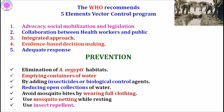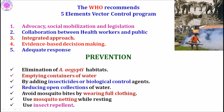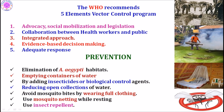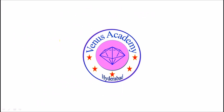Prevention includes eliminating Aedes aegypti habitats by draining standing water, adding insecticides, using biological control agents, and reducing open water collections. Avoid mosquito bites by wearing full clothing and using mosquito netting. Insect repellents should also be used to avoid mosquito bites. Awareness of dengue fever and prevention of mosquito bites are the most important protective measures.